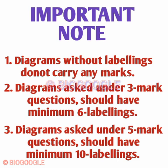Diagrams without labelings carry zero marks. If a diagram is asked for three marks, it must have a minimum of six labelings. If a diagram is asked for five marks, it must have at least eight to ten labelings. Only then can you get three out of three or five out of five marks for diagrams.